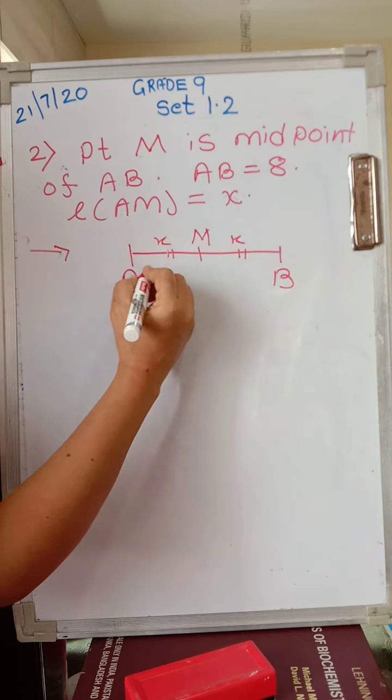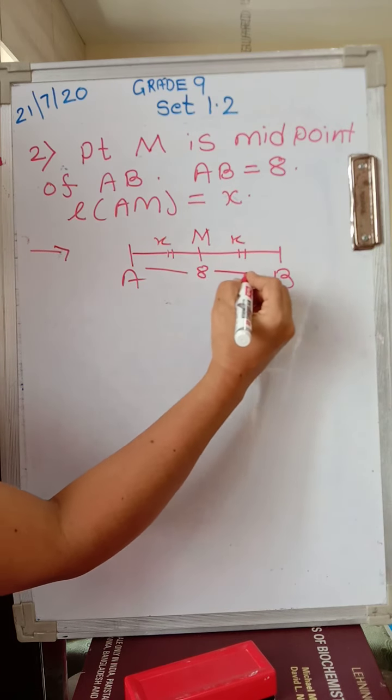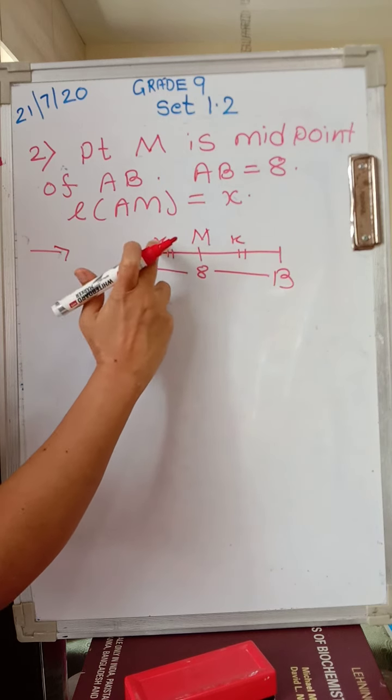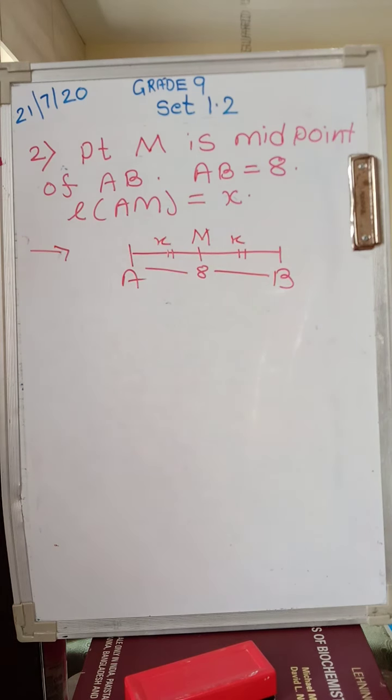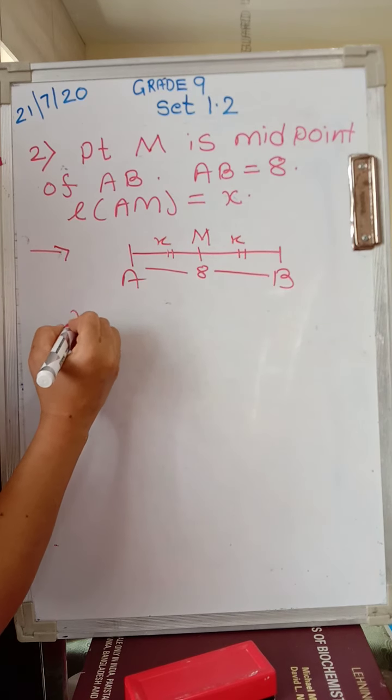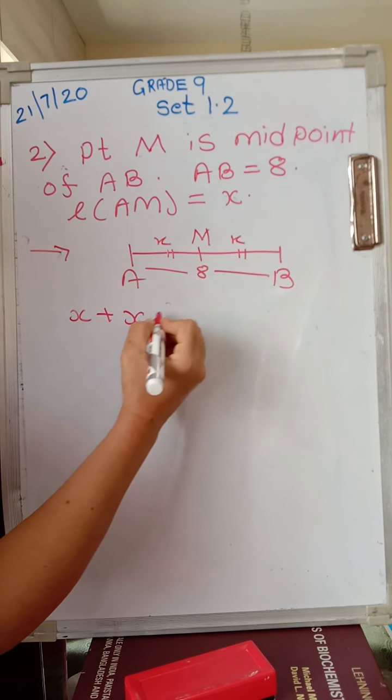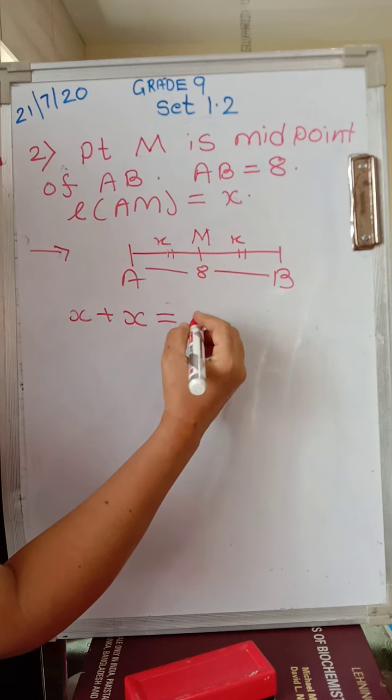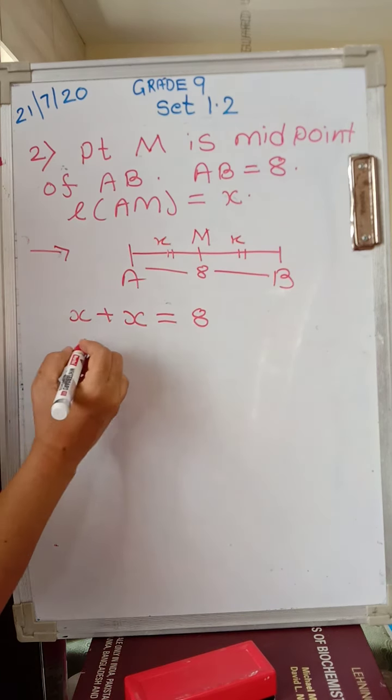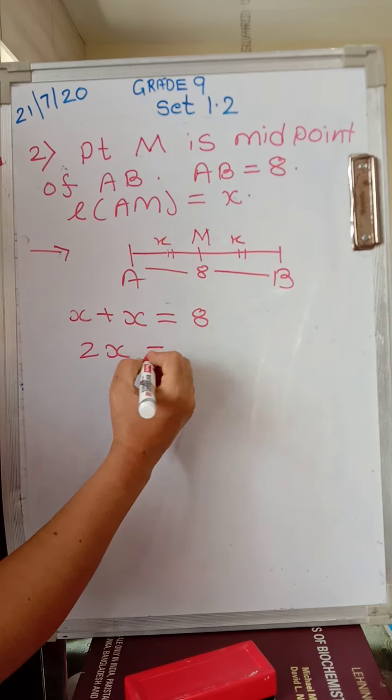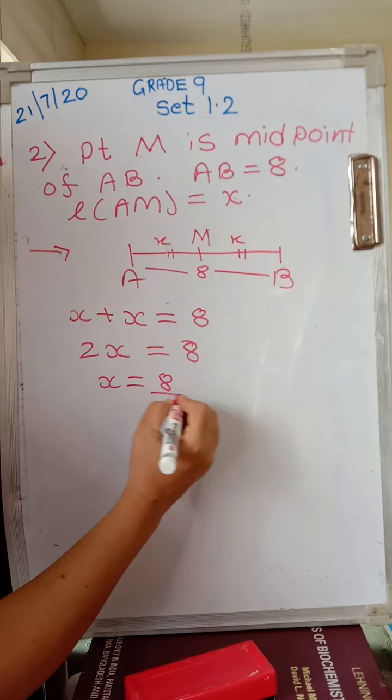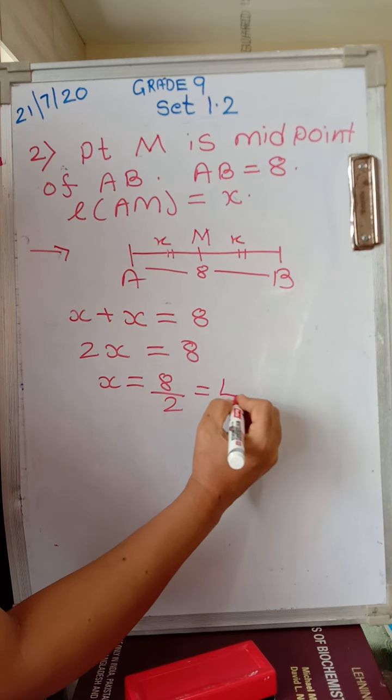How much is total AB given? AB is given as 8 units, and we have to find AM. We have supposed AM is equal to X. So let's calculate. We have X plus X equals 8. This is clear from the figure. So we have 2X equals 8, and therefore X equals 8 divided by 2, which equals 4.